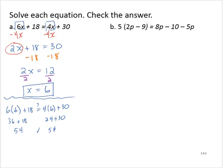Exercise B: 5 times the quantity 2p minus 9 is equal to 8p minus 10 minus 5p. The first thing we're going to do is simplify both sides.